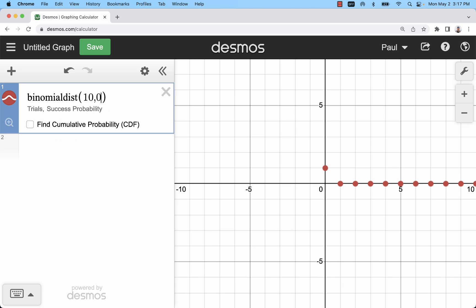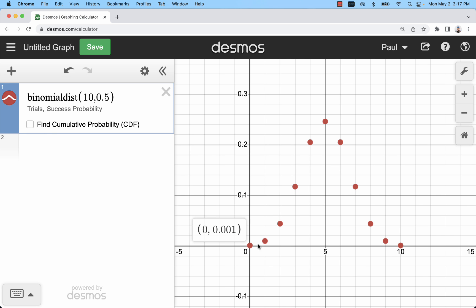For example, if we're flipping a coin 10 times, that would be 10 and 0.5, 50% chance of heads or tails. And then now x is going to measure the number of heads, for example, and y will be the probability of that many heads.